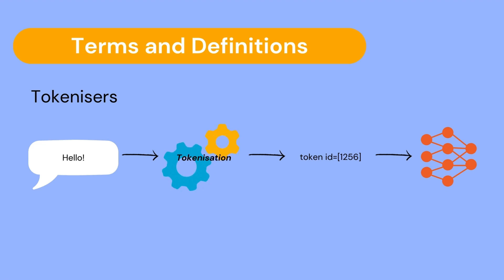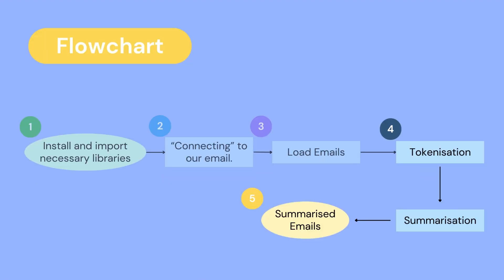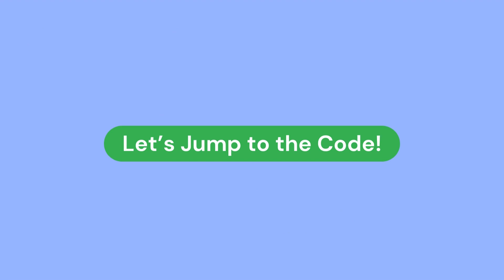Now that we have the basic idea of NLP and tokenization down, let's take a look at the flowchart of the code. In our last video we imported the necessary libraries, connected to our emails, and loaded some information such as the subject and date of the emails. In this video we will also load the body of the email, convert that body text into numbers through tokenization, then pass that data into a pre-trained summarization model to get the output — which is the summarized emails. So without further ado, let's jump to the code.